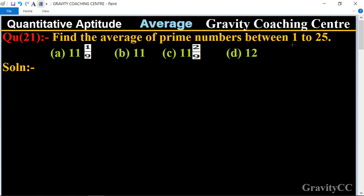So first of all, we write all the prime numbers between 1 to 25. So this one is 2, 3, 5, 7, 11, 13, 17, 19, and 23.